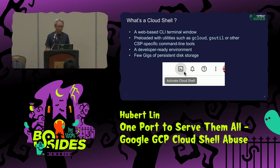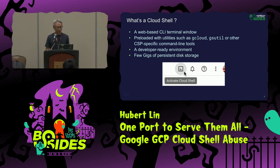One of the best things is there are a few gigabytes of persistent disk drives in your home directory, so once you have some development or some stuff you need to keep, it'll be persistent forever. For GCP, we have about five gigabytes of storage, and maybe one gigabyte for AWS.